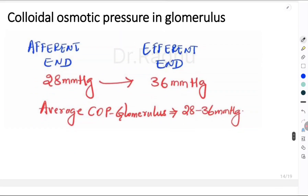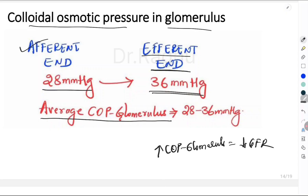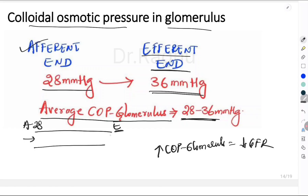Next is the colloidal osmotic pressure in the glomerulus. An increase in colloidal osmotic pressure in the glomerulus causes a decrease in GFR. The colloidal osmotic pressure at the afferent end of the glomerulus is 28 mmHg and at the efferent end it is 36 mmHg — so the average varies between 28 to 36 mmHg. At the afferent end the pressure is 28; by the time plasma reaches the efferent end the colloidal osmotic pressure becomes 36 mmHg.